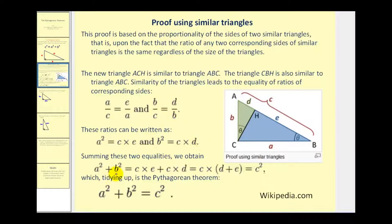So A squared plus B squared can be written as C times E plus C times D. Notice these two products have a common factor of C. So if we factor out C, we're left with C times D plus E. But notice D plus E is just C. So we'd have C squared here, and therefore the Pythagorean Theorem showing that A squared plus B squared is equal to C squared.